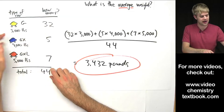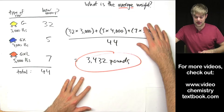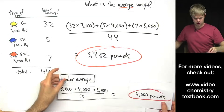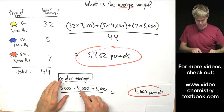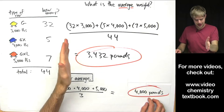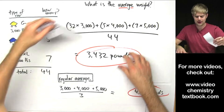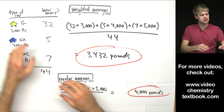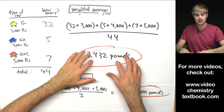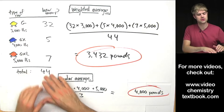This number is closest to the weight of the Lamona G, which makes sense because we have a lot more G's than the heavier GX's and GXL's. The regular average would have been (3,000 + 4,000 + 5,000) ÷ 3 — a number right in the middle. But the weighted average takes into account how many of each type we have and gives a number much closer to the type of car we have the most of.